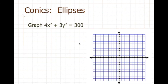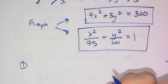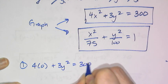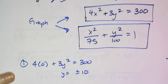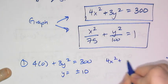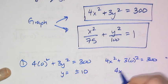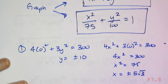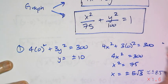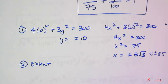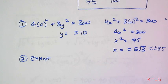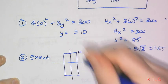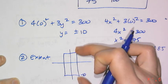Let's graph the ellipse 4x²+3y²=300. To find the intercepts, set x or y equal to zero. Setting x=0 gives 3y²=300, so y = ±10 — those are the y-intercepts. Setting y=0 gives 4x²=300, so x²=75, meaning x = ±5√3. With a calculator, 5√3 is approximately 8.5.